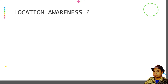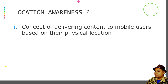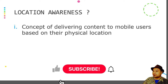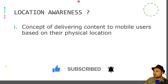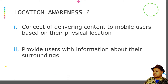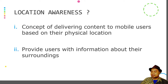So what is location awareness? Location awareness is a concept of delivering content to mobile users based on their physical location. The physical location plays a key important factor for delivering content. The main reason for having location awareness is because we want to avoid noises. With location awareness, most applications can provide users with important information about their surroundings, effectively filtering out unimportant data so that the user won't be burdened with information overload.